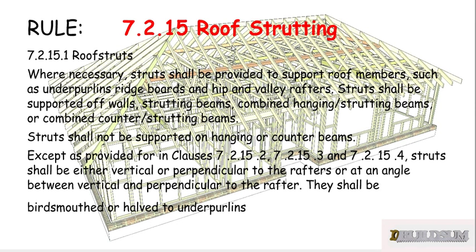Rule 7.2.15 says that when necessary, struts shall be provided to support roof members such as underpurlins, ridgeboards, hip and valley rafters. Struts shall be supported off walls, strutting beams, combined hanging strutting beams, or combined counter strutting beams.